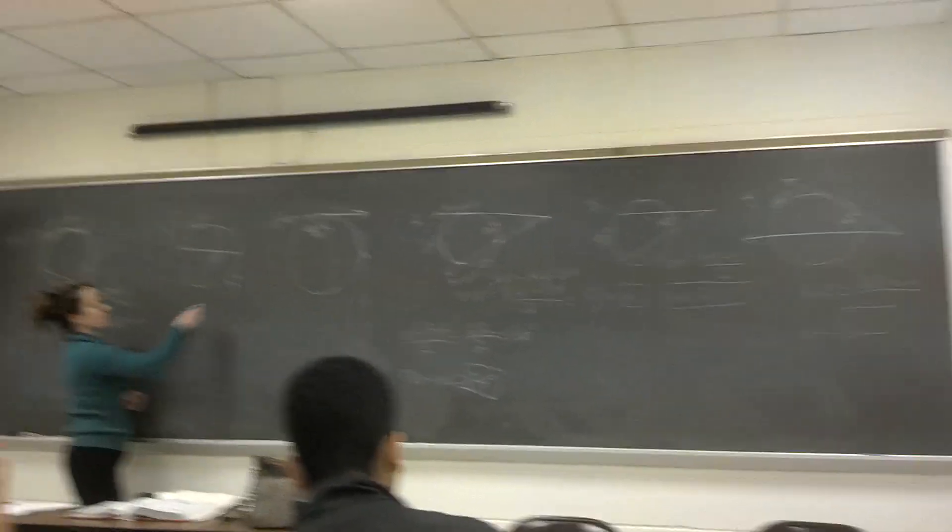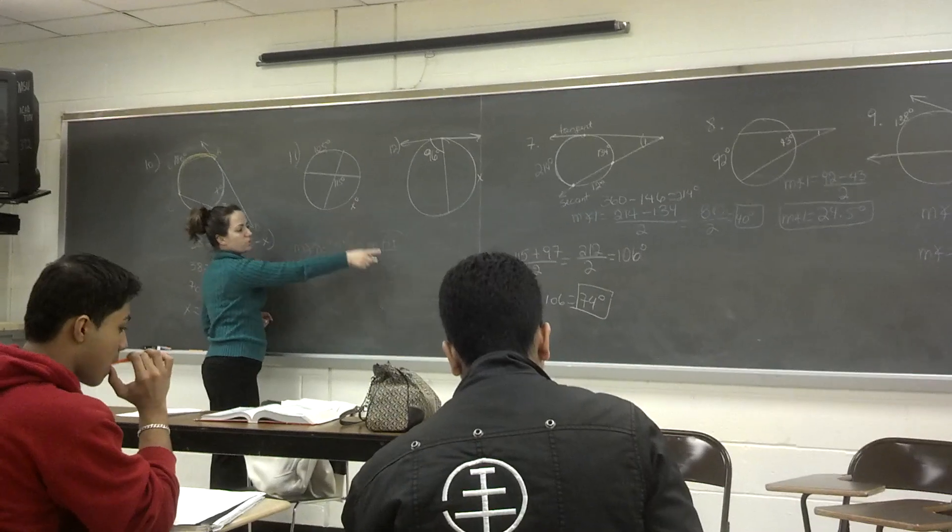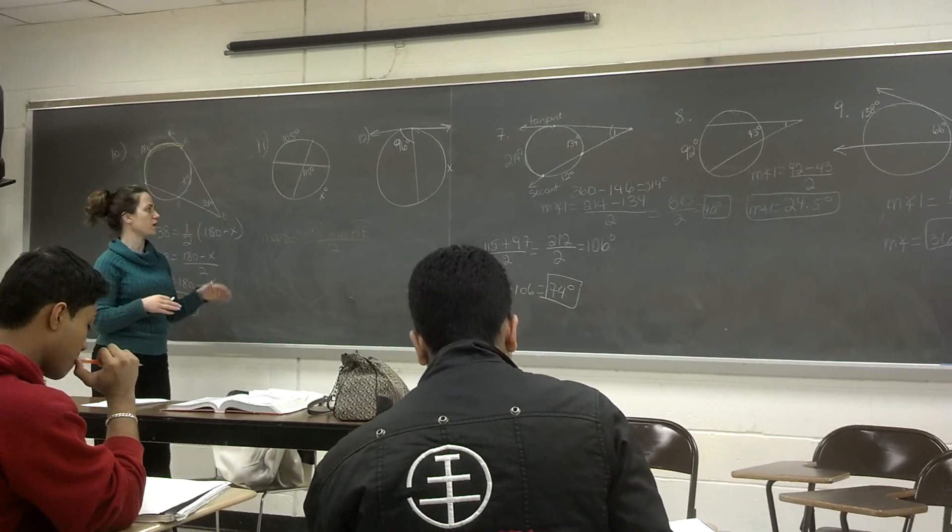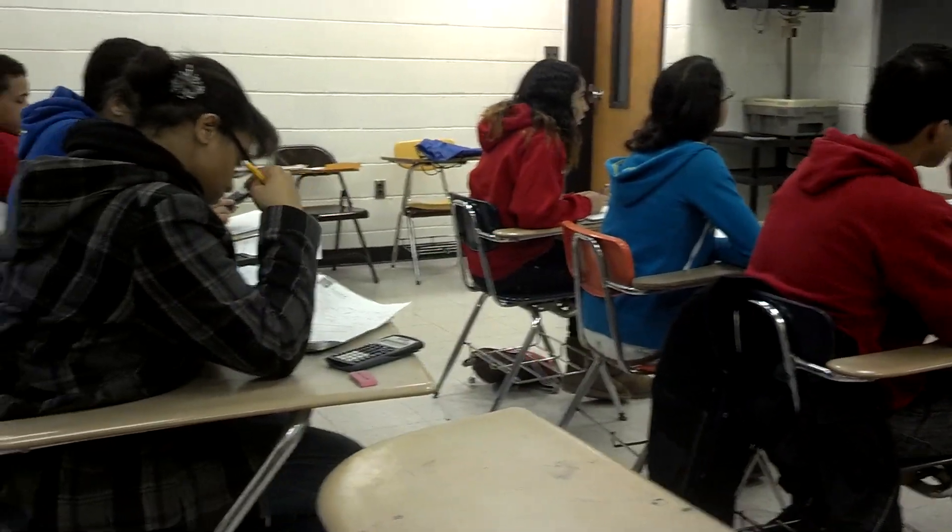Okay, what about 11? Now, what's the difference with 11? So this is the intercepted arc, okay? We don't have to worry about, like, the number 6, you know, subtracting, figuring out the other angle or the other arc.